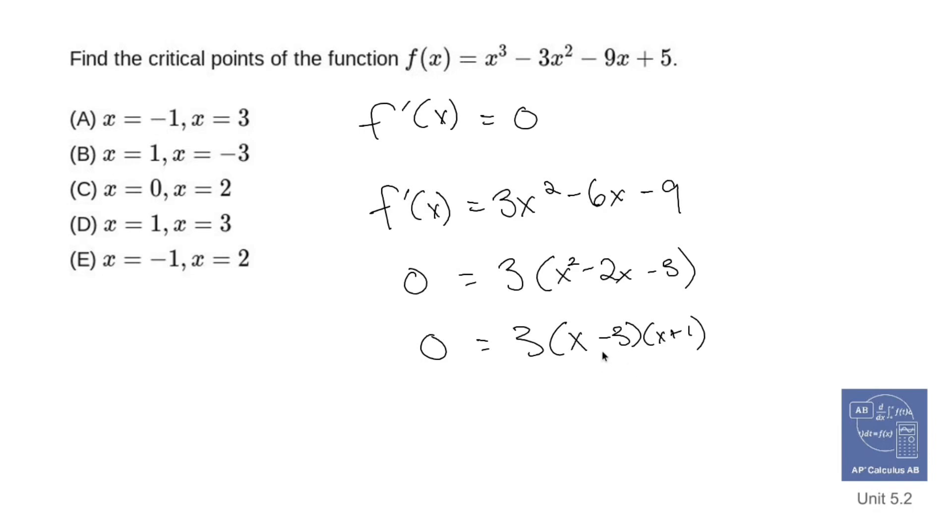Now according to the zero product property, the two x values that will make that equal to 0 will exist at 3 and at negative 1. This 3 means nothing, there's no x attached. So my answer is A, 3 and negative 1.